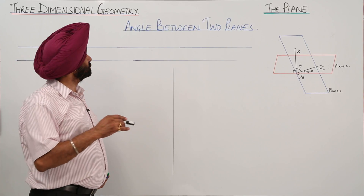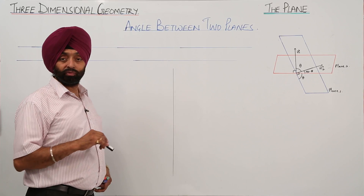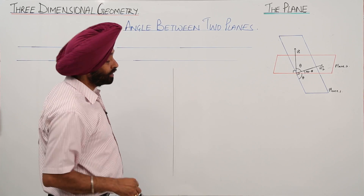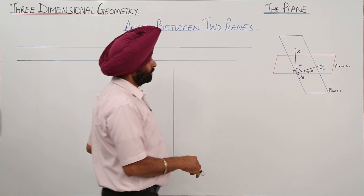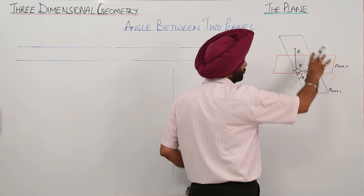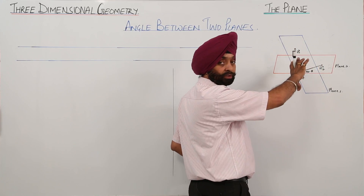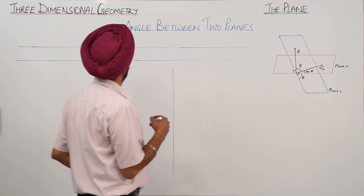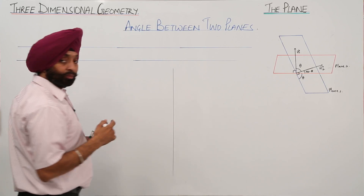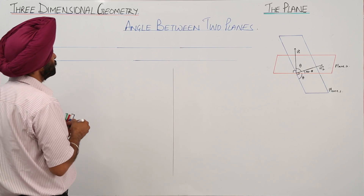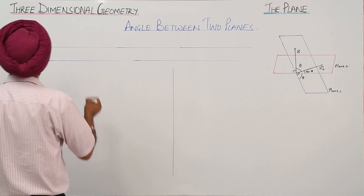The next topic is angle between two planes. I have already drawn a figure here. One plane is in red and one plane is in blue. What is the angle between them? Let's define it first.